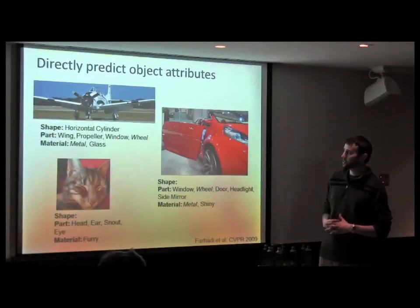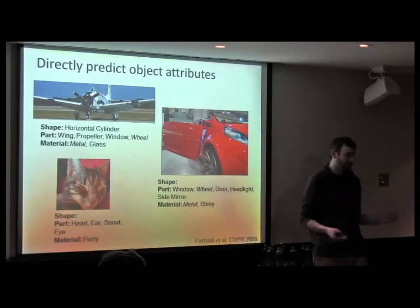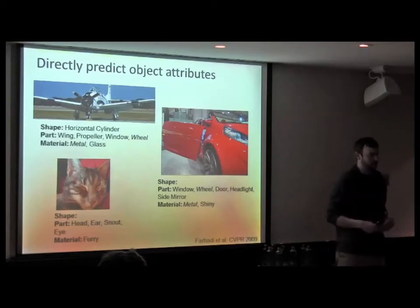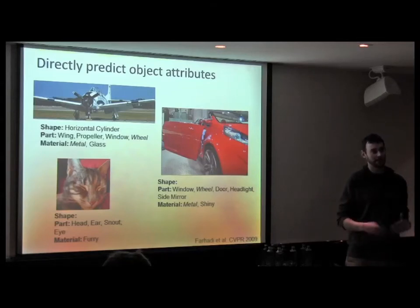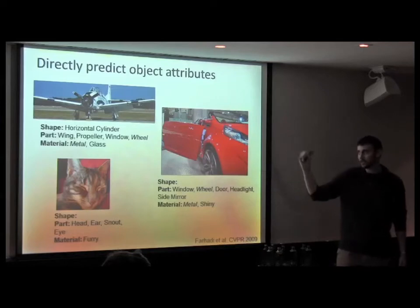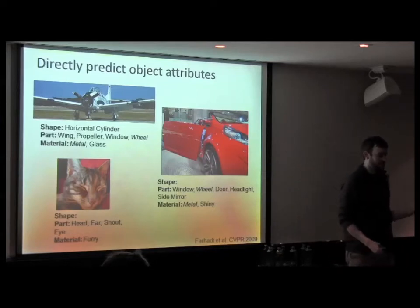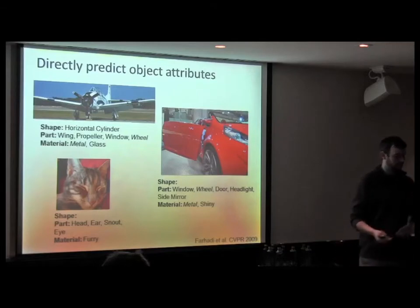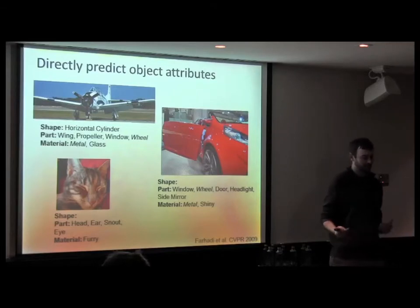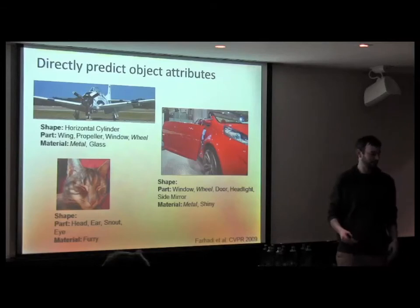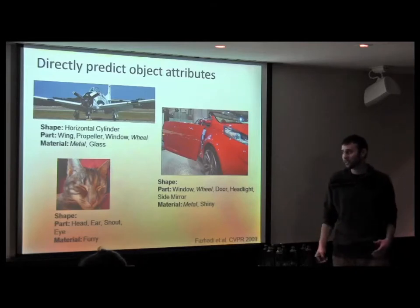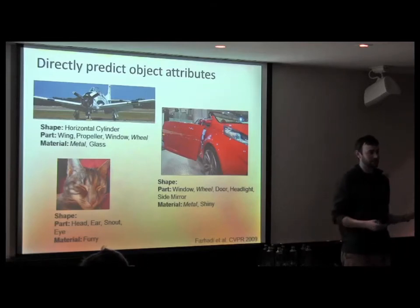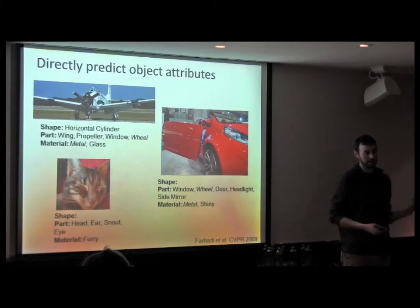The idea is to describe different kinds of objects according to their shape, parts, and materials, and learn to predict those properties in a way that will generalize to new kinds of objects. For example, an airplane is described as having a horizontal cylinder shape, with wings, propeller, windows, wheels, made of metal and glass. A car has windows, wheels, doors, headlights, side mirrors, and is made of metal and is shiny. These different properties describe objects, and some are shared among objects in different categories, allowing you to relate something new to something you've seen before.